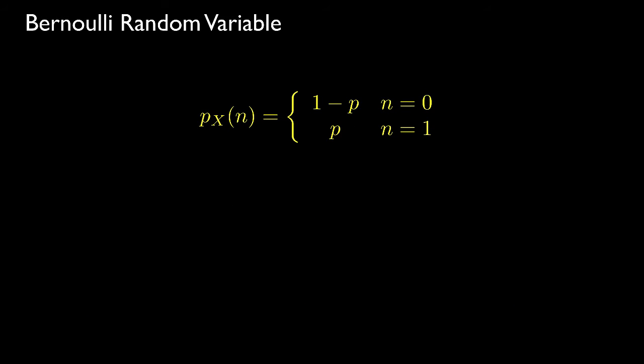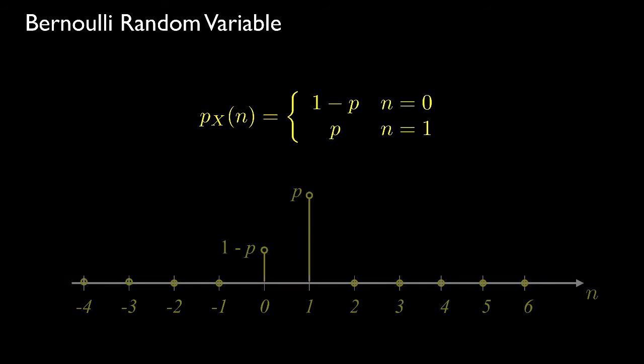A Bernoulli random variable is a discrete random variable that can take one of two values, often 0 and 1. The probability mass function is determined by specifying the probability p that the random variable takes one of its values; the other value occurs with probability 1 minus p. Sometimes we associate one value as a success, calling its probability the success probability. The probability mass function is non-zero only over those two possible values.